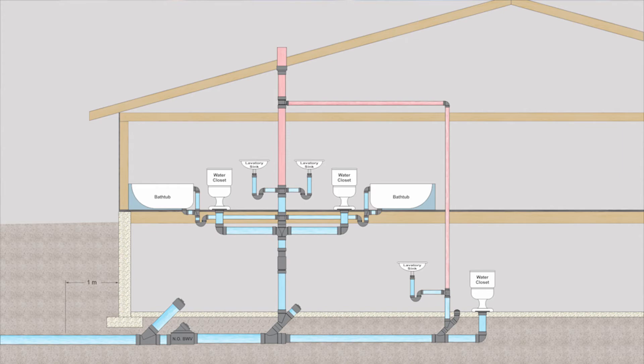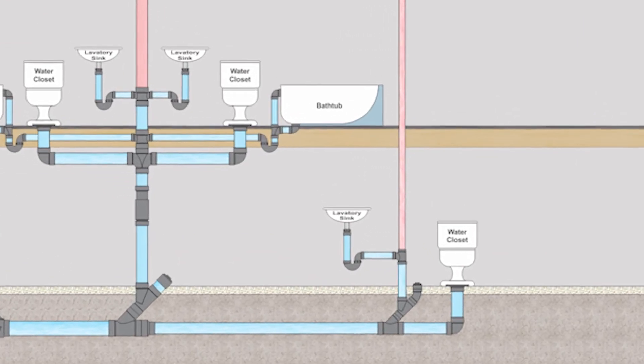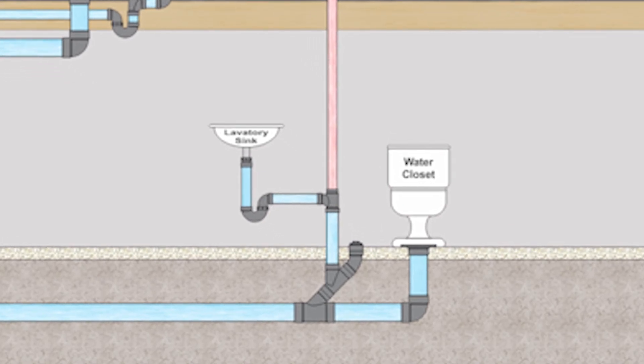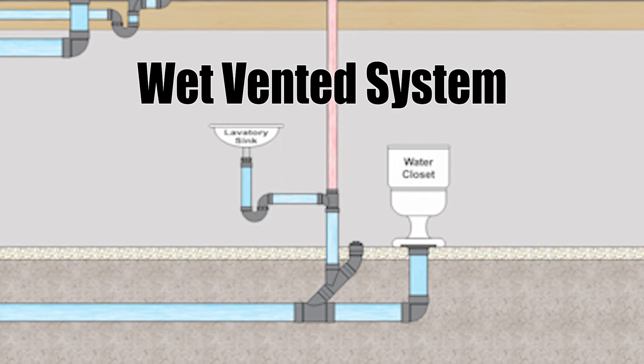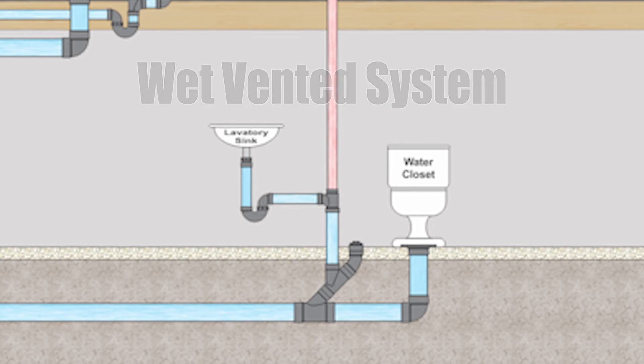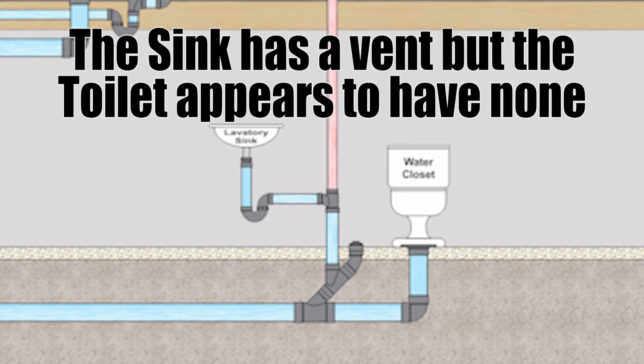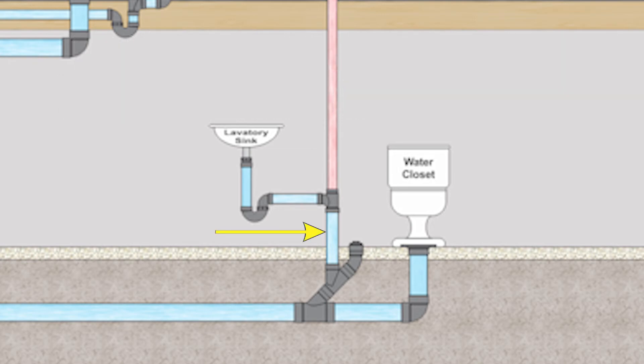Now I do have a slightly modified diagram here and I want to go through this because there's some very important things that we need to pick apart here. Let's look at this powder room that's down in the basement. A powder room is a small bathroom that has a sink and a toilet and that's it. We have a drainage arrangement here that we have not talked about yet. This is a wet vented system with this bathroom.